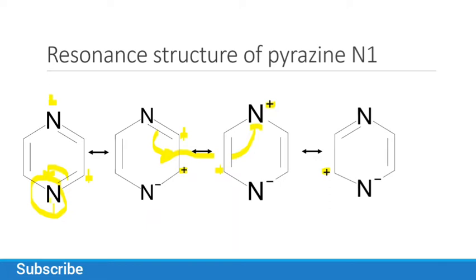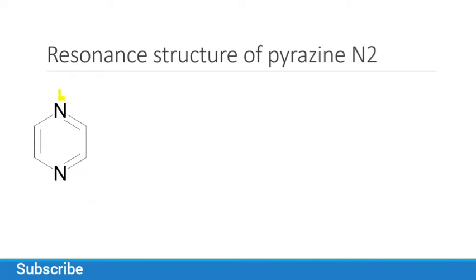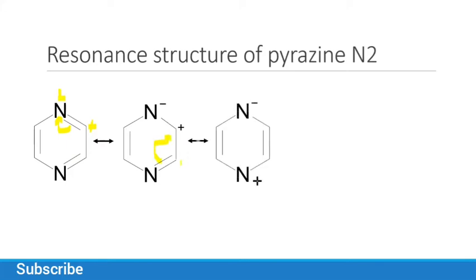N1 of pyrazine has four resonance structures. Similarly, N2 also has four structures. The electron from the double bond shifts to nitrogen and we have a positive charge, then the bond moves and we have a positive charge on nitrogen, and again bonds shift to give another positive charge, as shown in the picture. So in total, from N1 we have four structures and from N2 we have four structures.